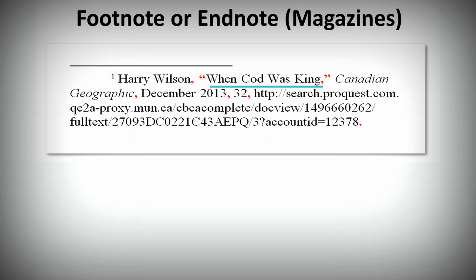Leave out the word 'the' from the title of magazines. Next, enter the name of the magazine in italics, followed by a comma. Then the month, day, and year of publication. In Chicago style, magazines are usually cited by date only, even if they have a volume and issue number.